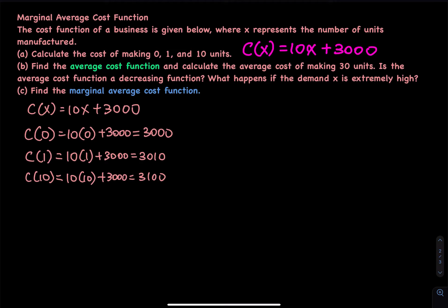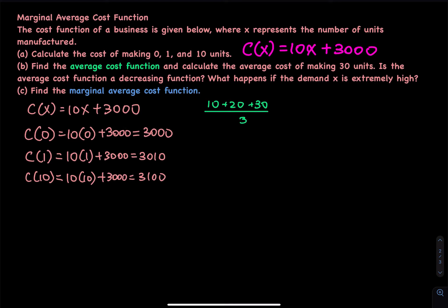Moving on to part B: find the average cost function. Let's go back to basics. Say you have three homework scores: 10, 20, and 30. What is your average homework score? You add them up and divide by the number of homework assignments, which is 3. The answer is 20, meaning on average you earn 20 points per homework.